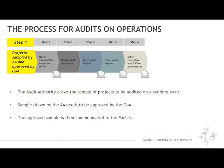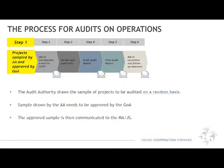Now I would like to give you more detailed information about each step of the process. As a first step, the projects are sampled by the audit authority and approved by the GOA members. The audit authority draws the sample of projects to be audited on a random basis. The population for sampling are the operations for which the certifying authority has declared expenditure to the European Commission in a given accounting year. The audit authority, assisted by the GOA, opted for non-statistical sampling. Using a two-stage sampling, the operations to be audited are selected at the first stage and the project partners to be audited are selected at the second stage. The sample together with the explanatory note is then communicated to the MAJS.